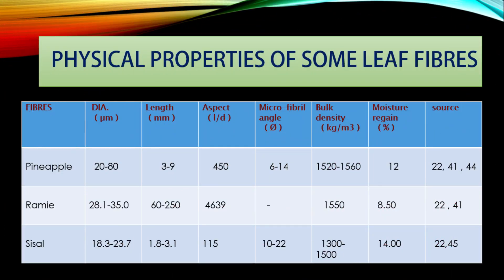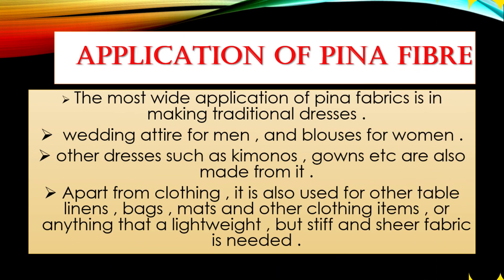Then I talk about the physical properties of leaf fiber. The same three fibers are compared. Physical properties shown here include diameter, length, aspect ratio, microfibril angle, density, moisture content, and the source where each fiber is available.